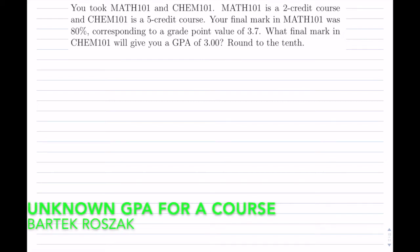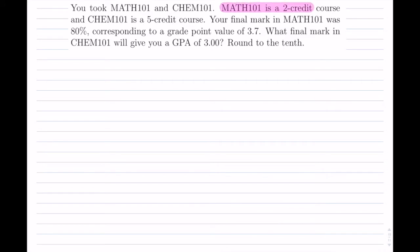You took math and chemistry. So it tells us that math is a two-credit course. That's for math. And chemistry is a five-credit course. So it's heavily weighted towards this chemistry class.